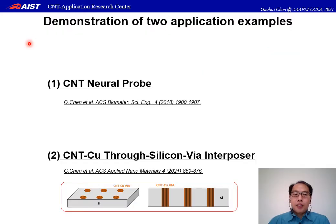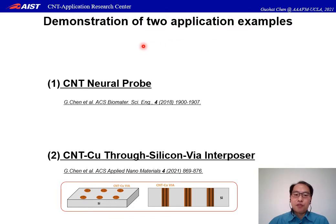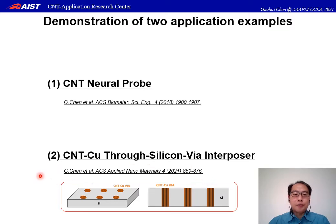Next, I would like to present two diverse applications utilizing this porous CNT structure. First is the CNT neural probe. Second is the carbon nanotube–copper composite Thru-Silicon-Via interposer. Please refer to our published articles for the details.